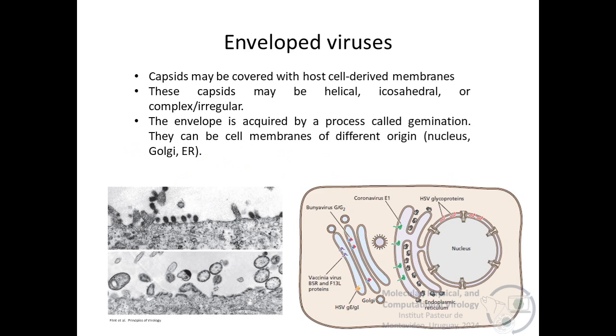Helical, icosahedral or complex irregular capsids can be enveloped by membranes derived from the host cell. The envelope is acquired by a process called budding. They might be cell membranes of different regions. Embedded in the membrane are viral proteins, the vast majority of which are glycoproteins that carry covalently linked sugar chains or oligosaccharides. The presence of viral glycoproteins in specific cell membranes determines the site of assembly and envelope acquisition.